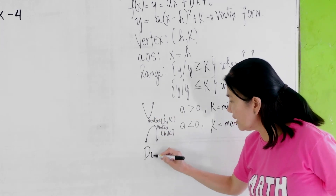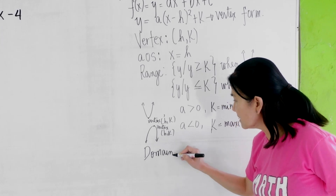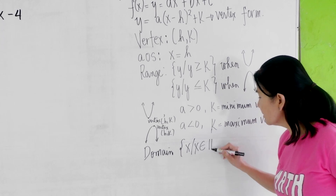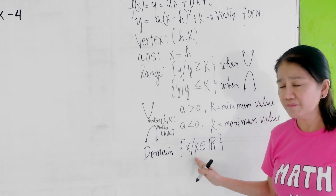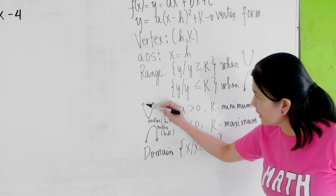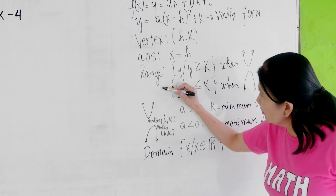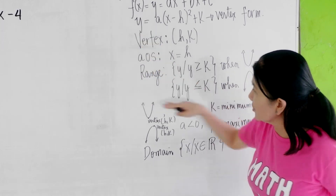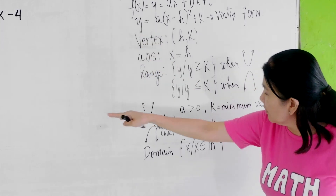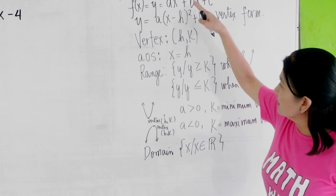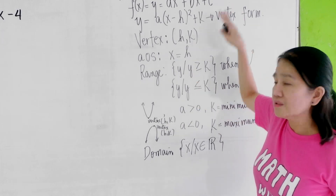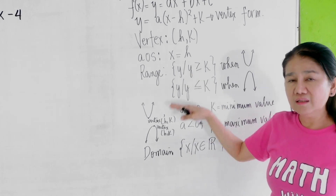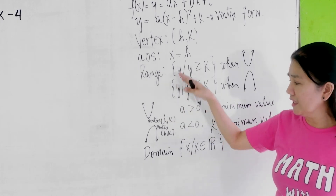And of course, your domain will be the set of all real numbers. Why? Because if you graph a parabola, it goes on and on continuously in both directions, so the set of all x values — all possible values of x in a quadratic function — is the set of all real numbers.